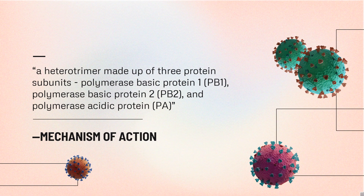The influenza virus RNA polymerase complex is a heterotrimer made up of three protein subunits: polymerase basic protein 1 (PB1), polymerase basic protein 2 (PB2), and polymerase acidic protein (PA). This polymerase complex is an influenza-specific enzyme essential for viral gene transcription and replication, with its subunits playing different roles in viral mRNA synthesis.